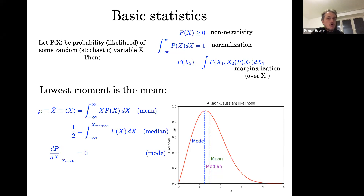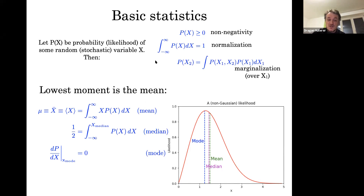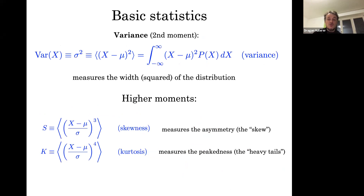If you're learning about statistics, Wikipedia is actually a pretty decent resource — unlike physics, where you really need a book or a course. Looking up the mean, median, or more complicated things: statistics is one place where Wikipedia can be helpful. Moving on: variance is a second-order quantity, the expectation value of the random variable minus its mean, squared. You can define higher moments — skewness, kurtosis — but in cosmology we rarely use them; we more often talk about the three-point correlation function and the bispectrum.